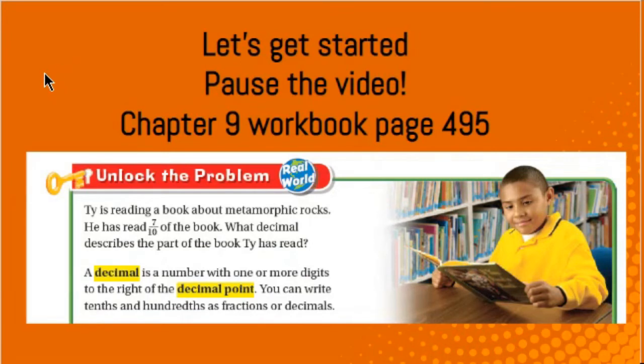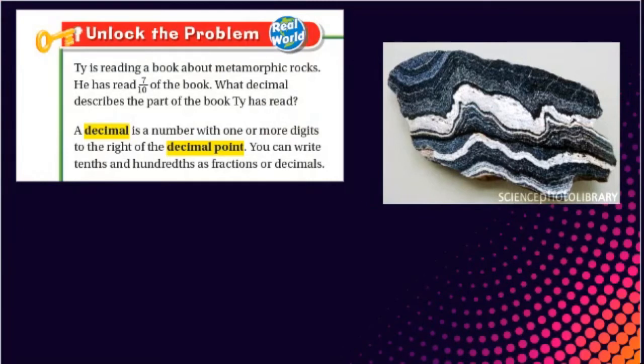So at this point, we're going to go ahead and get started with chapter nine in our workbook. So please go ahead and pause this video and make sure that you're open to page four hundred ninety-five. And you can see this unlock the problem with a boy here reading a book in front of you. Once you have that in front of you, let's go ahead and jump in. Please read your unlock the problem to yourself. Awesome. And now I will have a turn to read. Ty is reading a book about metamorphic rocks. He has read seven tenths of the book. What decimal describes the part of the book Ty has read?